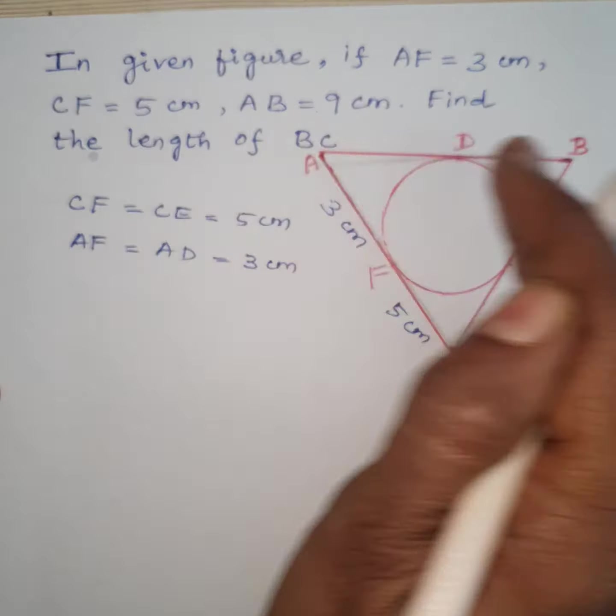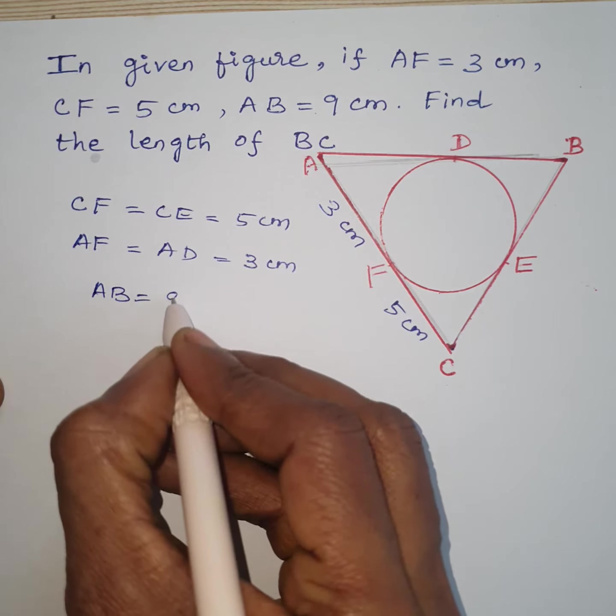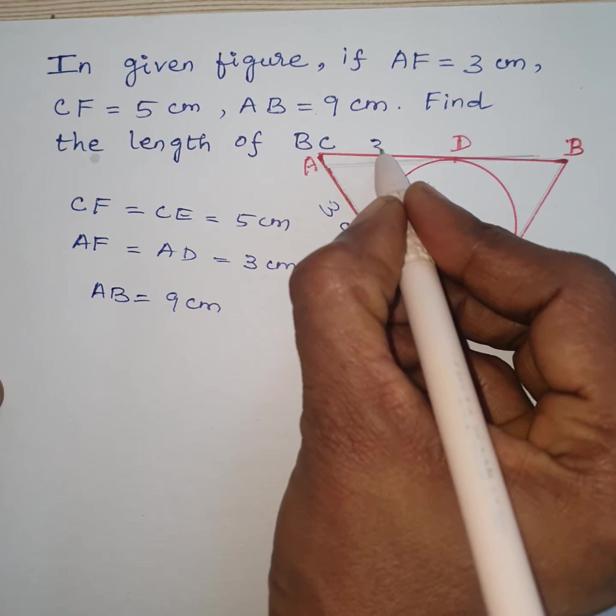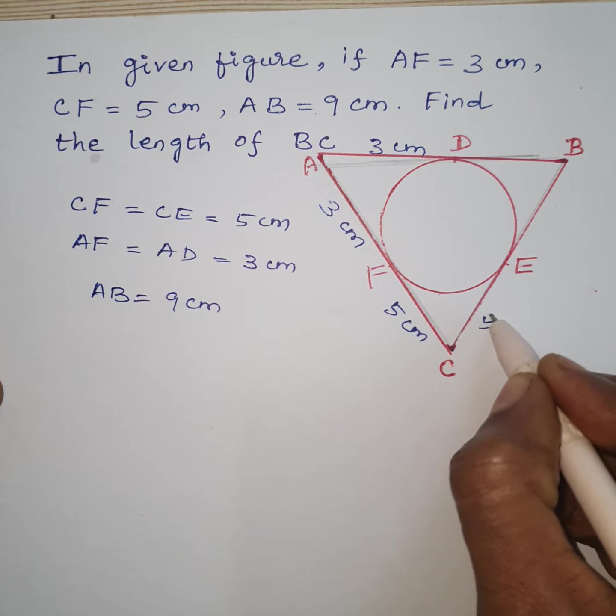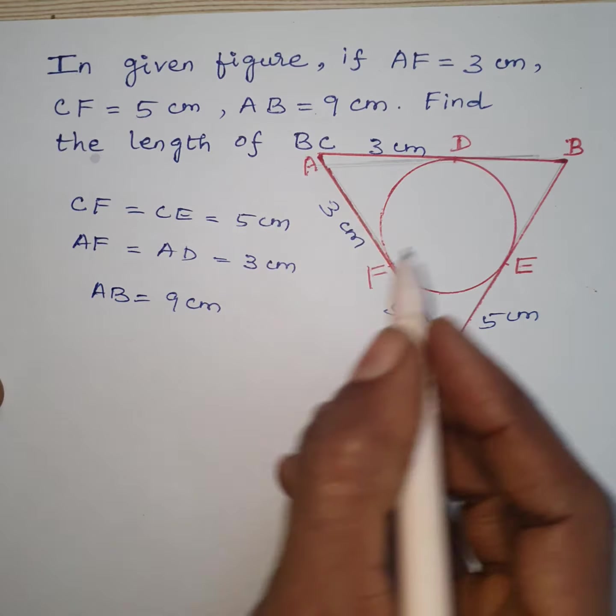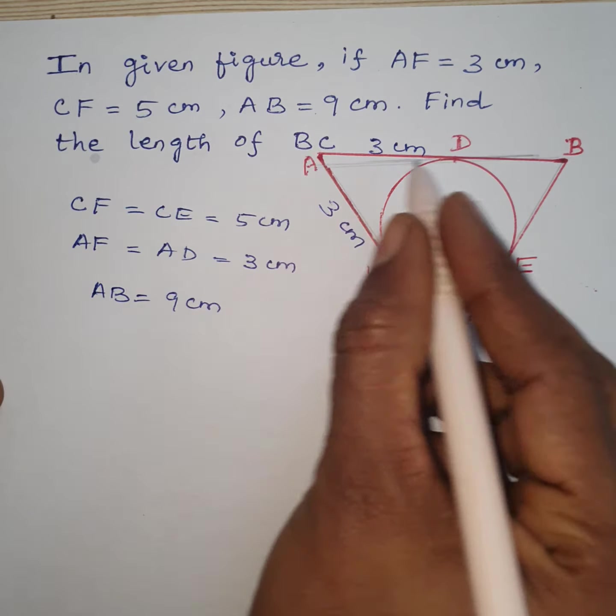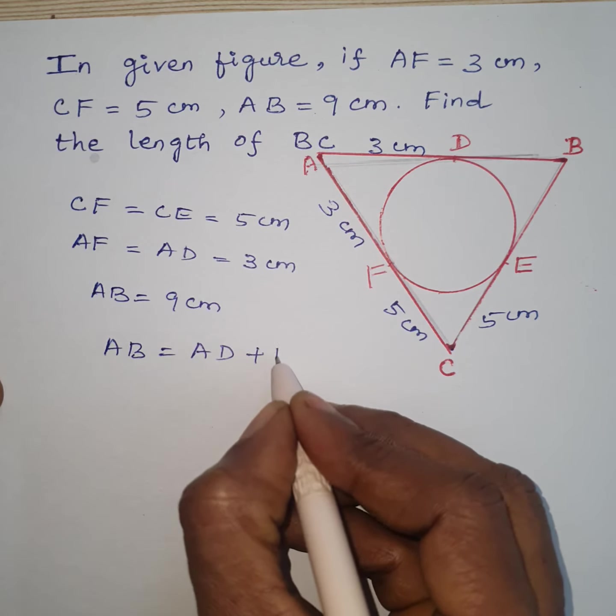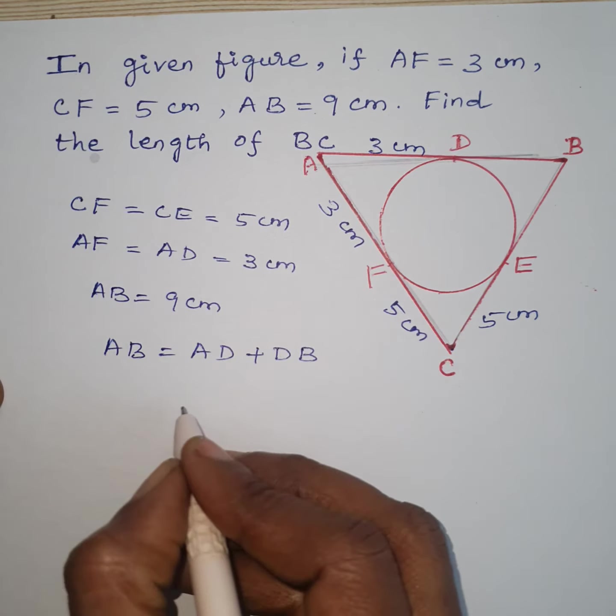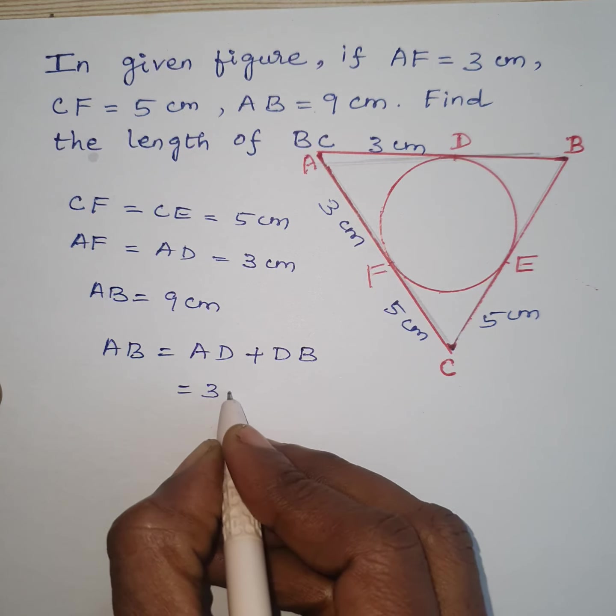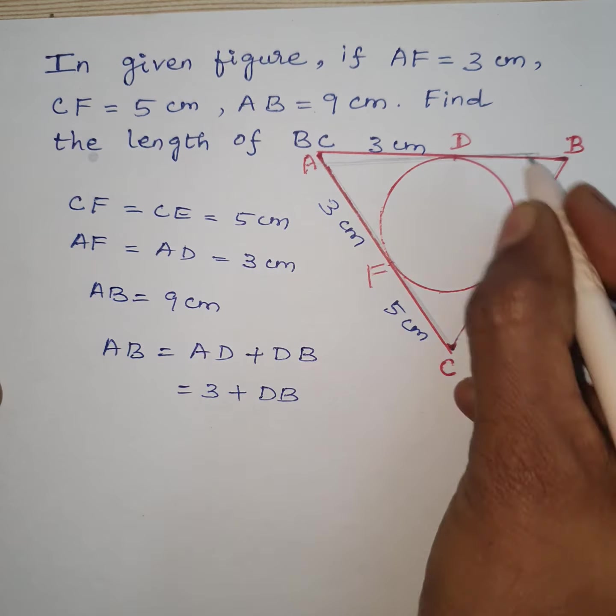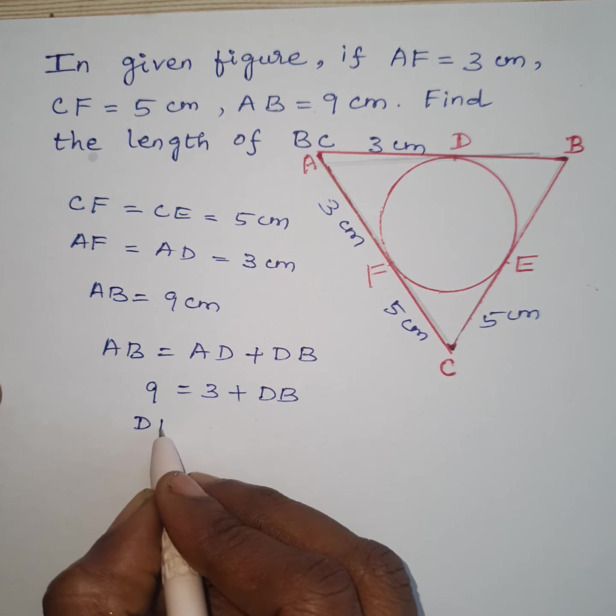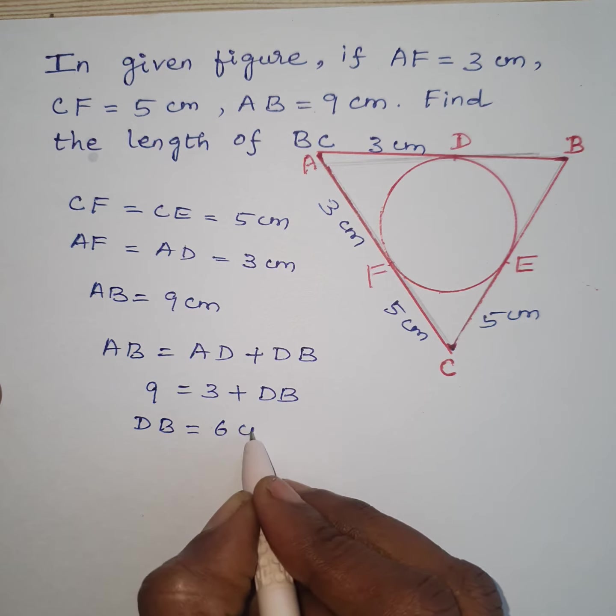We know AB is equal to 9 cm. Here AD is 3 cm and CE is 5 cm. From this you can write AB as AD plus DB. AD is 3 cm and DB is not known. And given AB is 9, from this we get DB is equal to 6 cm.